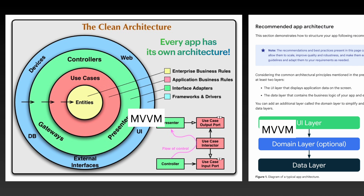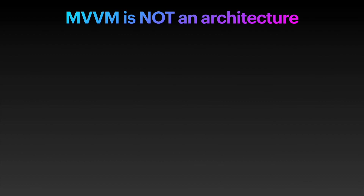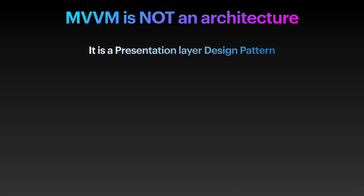Look how insignificant it seems to be when considering how huge an application can be. For small proof-of-concept apps, sure, MVVM could potentially cover most of what you need — throw the business logic in the view model, use the model for simple data handling, and call it a day. But in a POC, let's be real, any type of structure would work, as long as you avoid having a god activity or fragment. MVVM is not an architecture. It is a presentation layer design pattern. Its difference with MVP and other MV patterns is just in the way those UI components depend on each other, and we can argue that all of them achieve the same purpose.